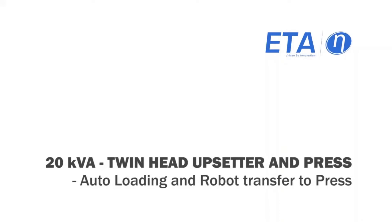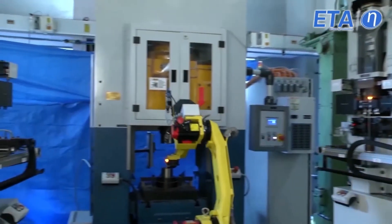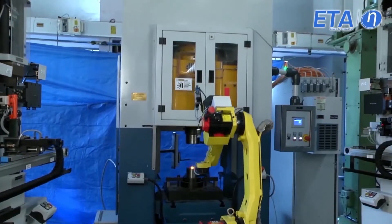Auto loading and robot transfer to press. ETA has developed and supplied many fully automatic cells for producing engine valve forgings.